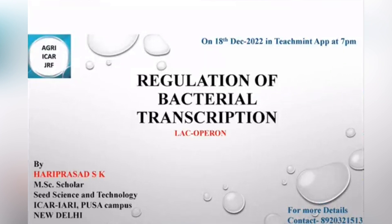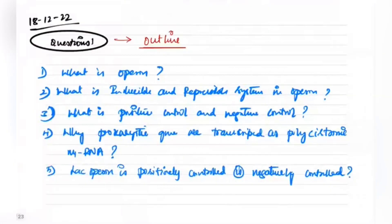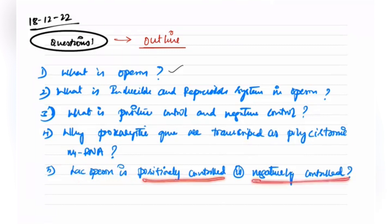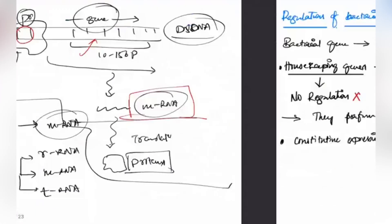We will specifically discuss the lac operon in detail. This is the outline of today's class. By the end of this video you will be able to answer: what is an operon, what are inducible and repressible systems, what is positive and negative control, and why prokaryotic genes are transcribed as polycistronic mRNA.